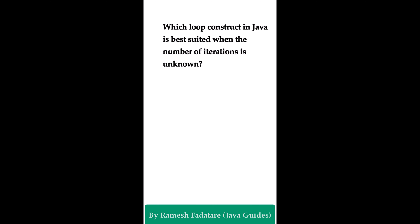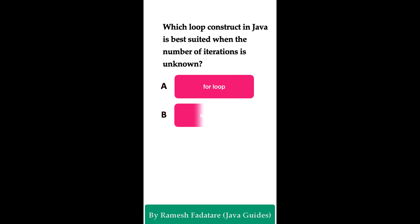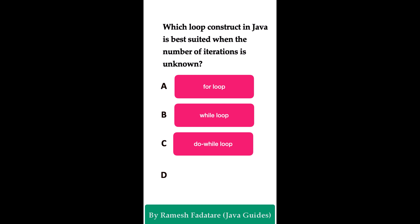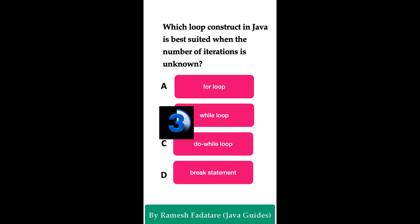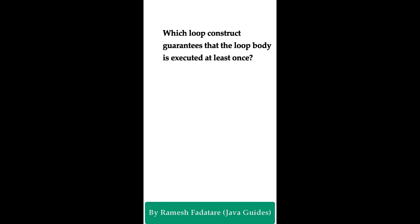Which loop construct in Java is best suited when the number of iterations is unknown? Option A: for loop. Option B: while loop. Option C: do-while loop. Option D: break statement. The correct answer is while loop. The while loop is ideal for situations with an unknown number of iterations because it evaluates its condition at the start of each iteration. This makes it flexible for looping until a specific condition is met without knowing the exact number of iterations in advance.